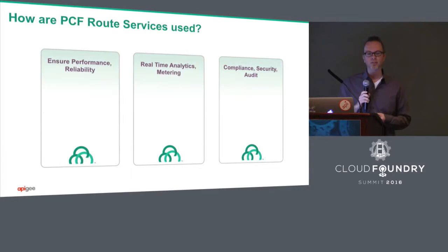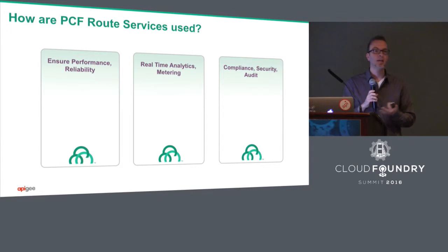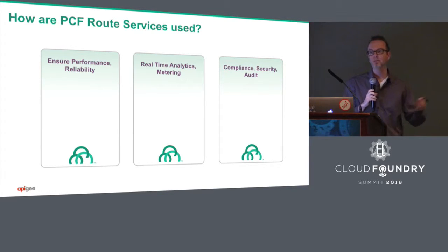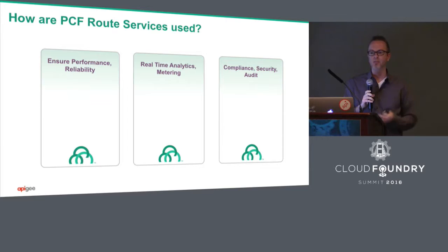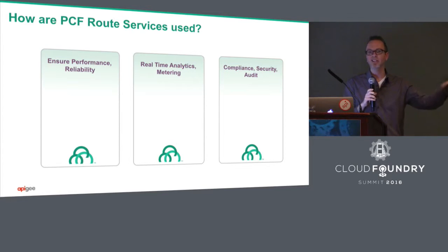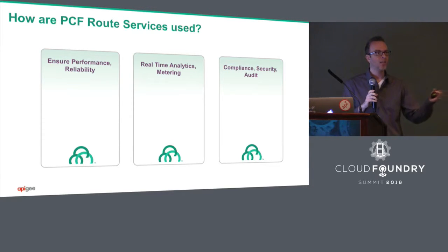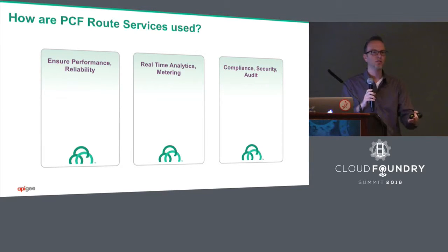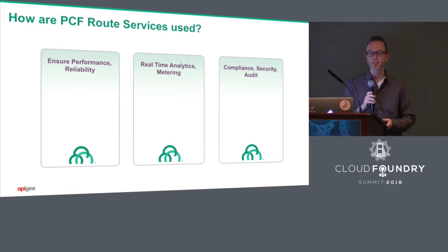When you look at route services, three core use cases we've thought about: performance and reliability — how do I inject caching into a route so things don't go all the way down to the service? Pull things from cache, increase app performance, even help reliability if downstream you're getting pummeled. Same with processing data — imagine adding a route service that throws everything into Amazon Kinesis for streaming analytics. Or adding dynamic tracing: add a route service for a few minutes to instrument a service, then take it back off without touching the service itself.